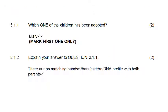Looking at the question, 3.1.1 asks which one of the children has been adopted - the answer is Mary. It's a two-mark question because there's quite a lot of thinking involved. Question 3.1.2 asks you to explain your answer, and it's important to use correct terminology. We are looking for 'no matching bands' or 'the DNA pattern doesn't match,' and it's very important to say 'with both parents' - she's not just not Tom's child, she's also not Maria's child.